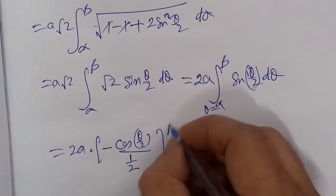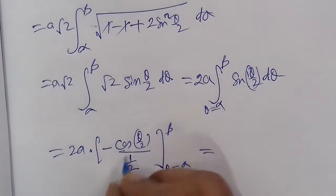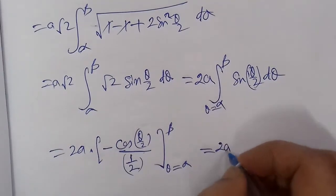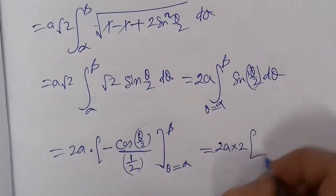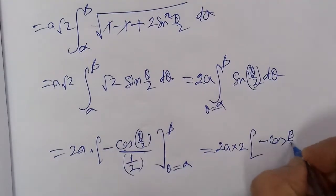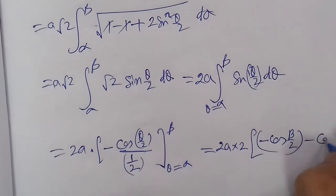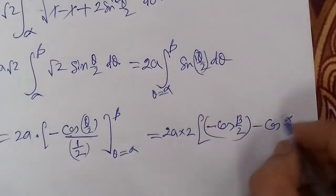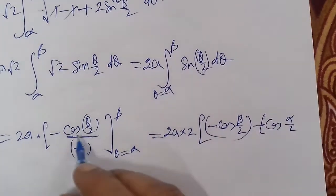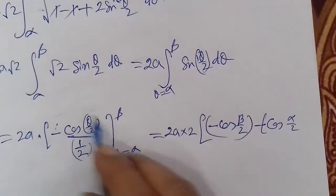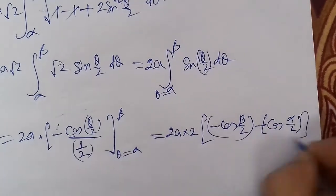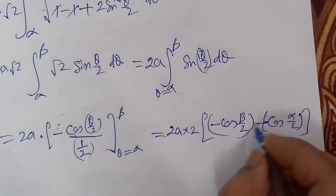The limit: where we have θ = β, we put β/2, and where we have α, we put α/2. = 2a[-2cos(θ/2)] from α to β. Upper limit where we have β: -2cos(β/2), minus where we have α: -2cos(α/2).